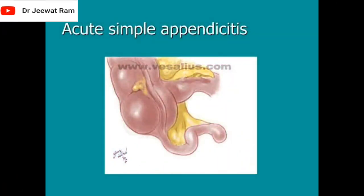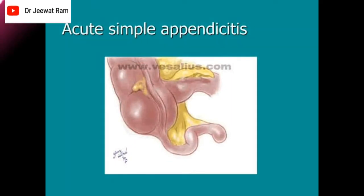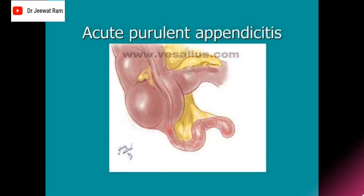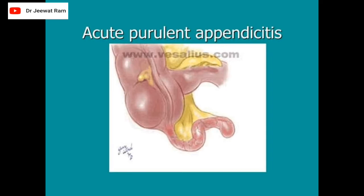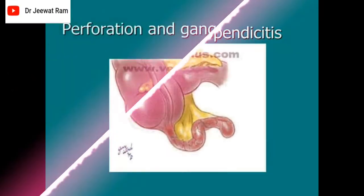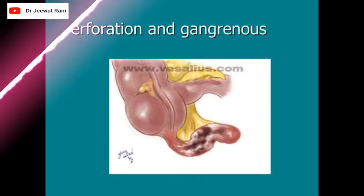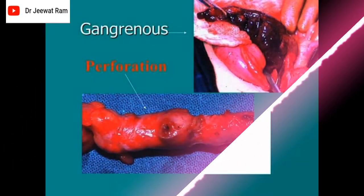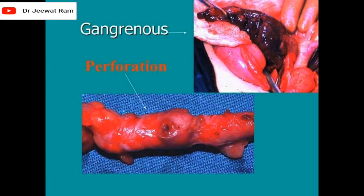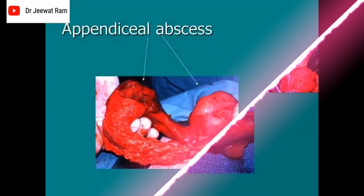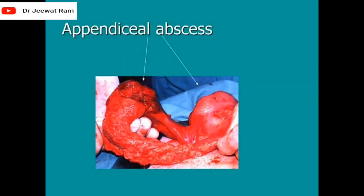In this picture you can see acute simple appendicitis. This is a picture of acute purulent appendicitis. This is a picture of appendicitis with perforation and gangrenous. This is another picture of gangrenous and perforation appendicitis, and appendicitis abscess.